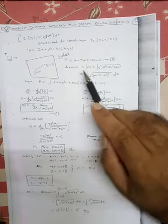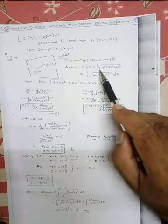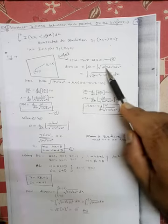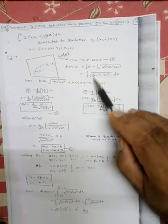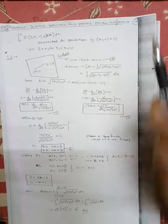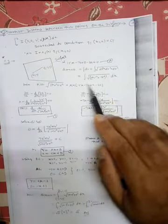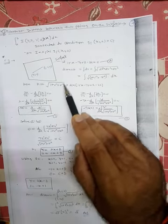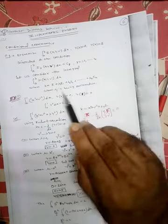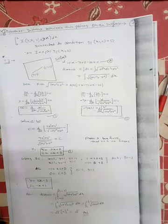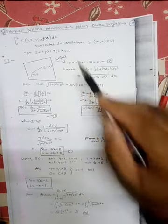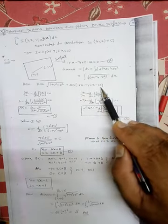The example: find the shortest distance between the points (2, 1, −1) and (1, −1, 0) on the surface 15x − 7y + z − 22 = 0. The distance formula in 3D is ∫ds = ∫√(dx² + dy² + dz²). Taking dx common: ∫√(1 + y'² + z'²) dx.